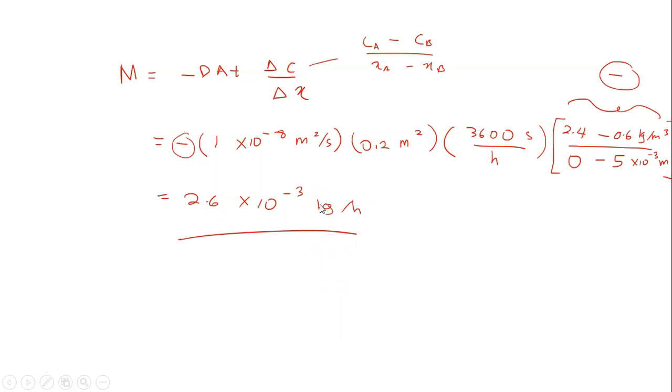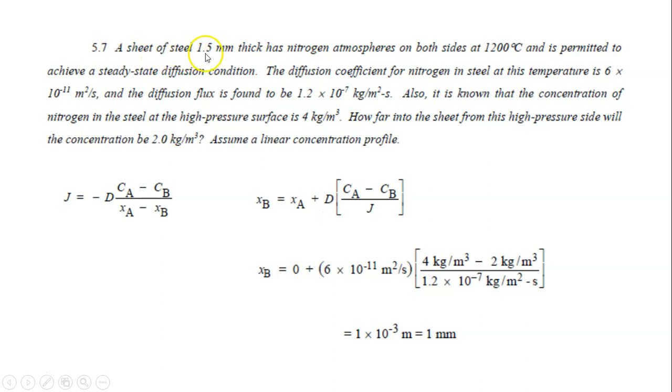Let's look at another question. A sheet of steel 1.5 mm thick has nitrogen atmospheres on both sides at 1200°C and is permitted to achieve a steady state diffusion condition. Again, this is steady state. So when you see steady state, automatically it reminds you of Fick's first law.